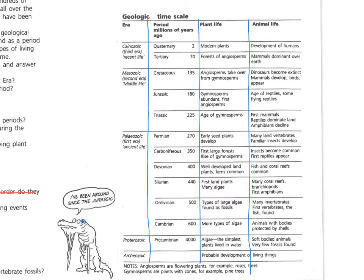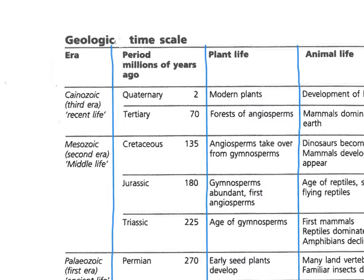Next thing, I want to zoom in and look in a little more detail at the headings. Our first two columns are both time columns. The first one is era, and I'd like you to highlight that in one colour, and also period in the same colour, to give you the idea that they both relate to the actual passage of time. The next two columns are plant life and animal life, which I'm doing in a different colour to point out the fact that they're not looking at time — they're looking at which forms of life have appeared and when.